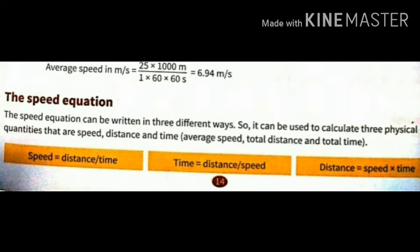If we have to find speed, then we divide distance by time. If we have to find time, then we divide distance by speed. If we have to find distance, then we multiply speed and time. So we get the distance.